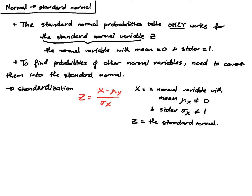The idea is: if you have a normal variable X and you subtract the mean from it, then divide the result by the standard deviation, you get the standard normal. And once you get the standard normal, you can use the standard normal probabilities table to find probabilities for the original variable X.